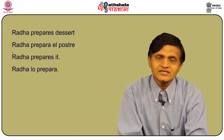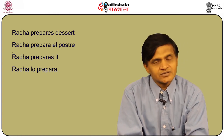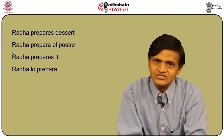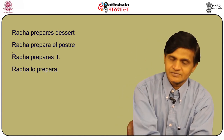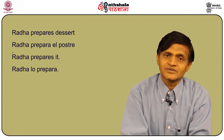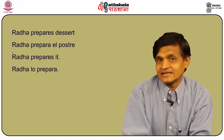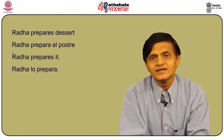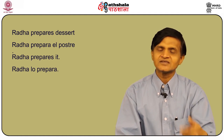Now let us replace the direct object 'dessert' with a direct object pronoun 'it'. In English, the sentence would then read: Radha prepares it. In Spanish: Radha prepara el postre. Radha is the subject, prepara is the verb conjugated as third person singular, and el postre is the object. Replacing with the DOP 'lo': Radha lo prepara. You do not need to repeat el postre every time.